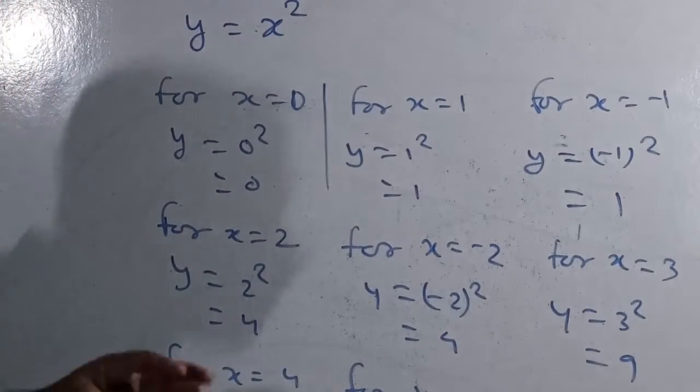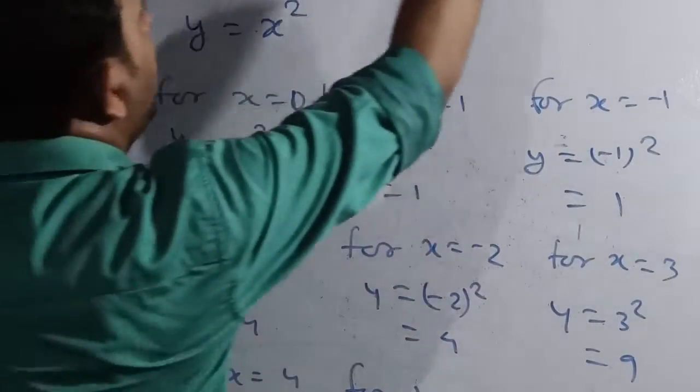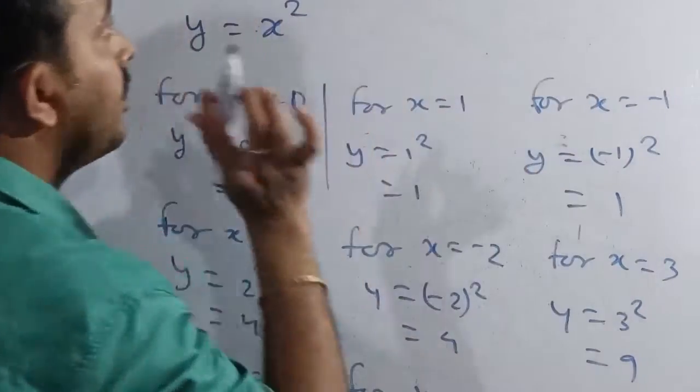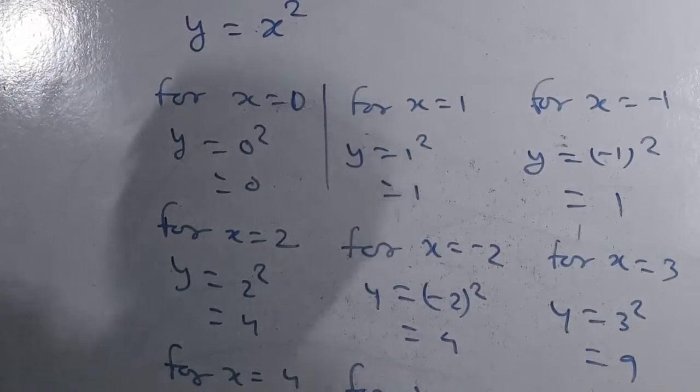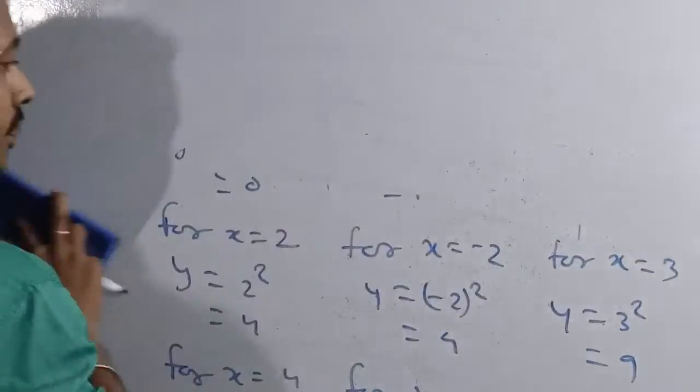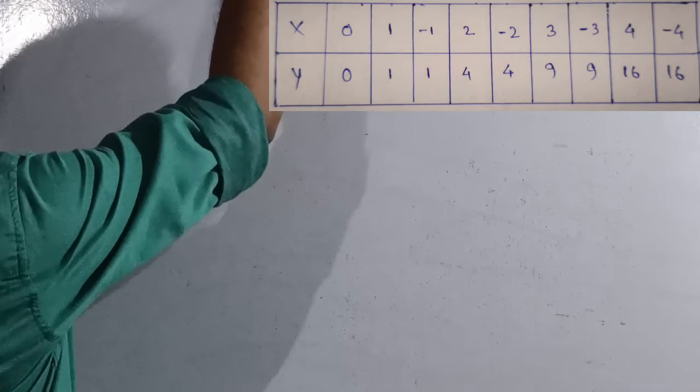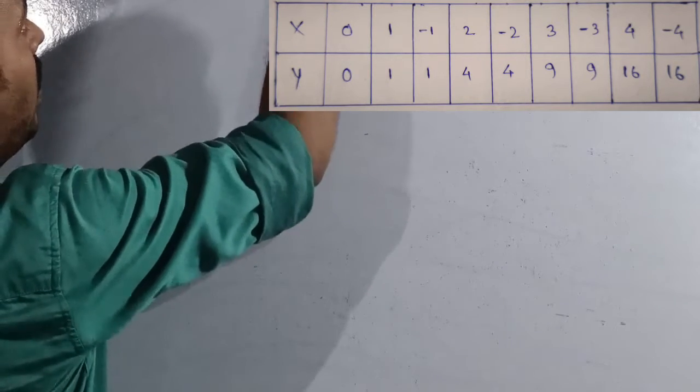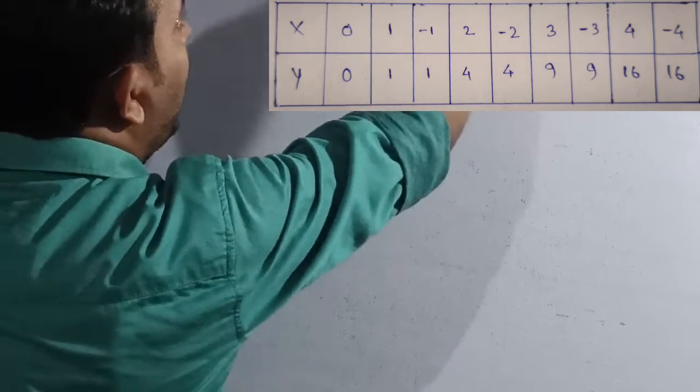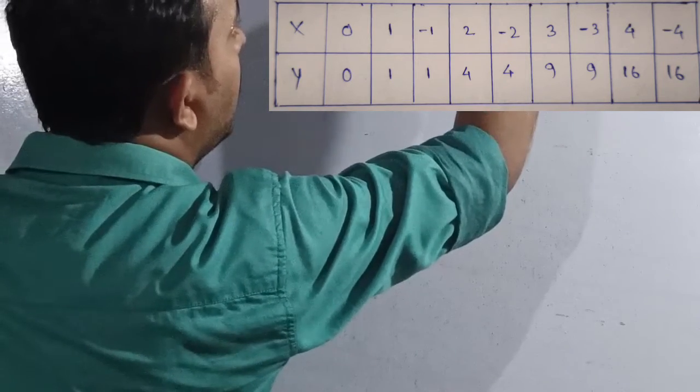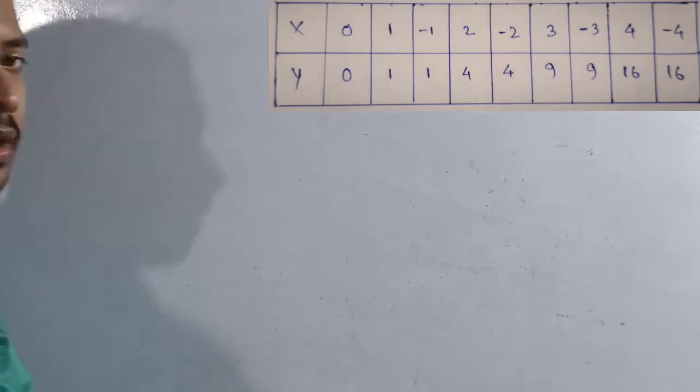That means parabola. So what we're going to do now, we need the box for this one. We'll make the solution box. Here we have, so we'll take the box: x and y. We get here zero zero, one one, minus one one, two four, minus two four, three nine, minus three nine, four sixteen, minus four sixteen.